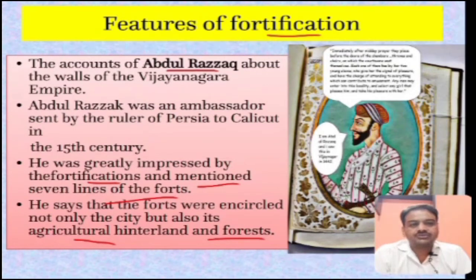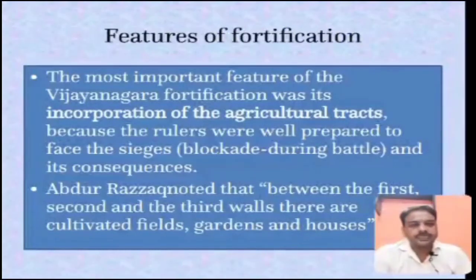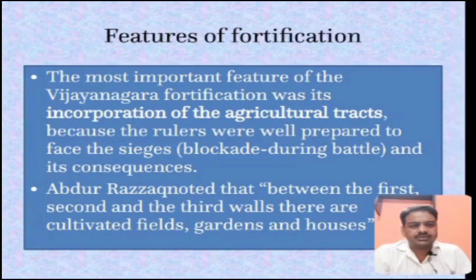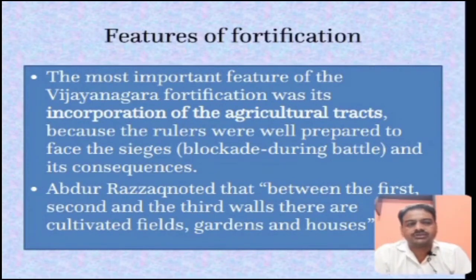To avoid such starvation, the people of Vijayanagara not only encircled the city but also encircled the agricultural hinterland, so that during sieges they could get a continuous supply of food. That is the reason for encircling the forest and agricultural hinterland. The most important feature of the Vijayanagara fort was its incorporation of agricultural tracts, because the rulers were well prepared to face sieges - blockades during battle that cut off food supply.